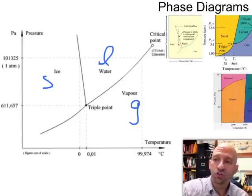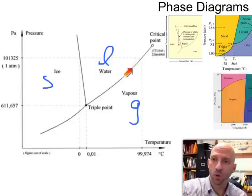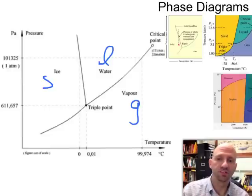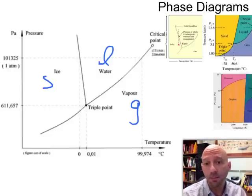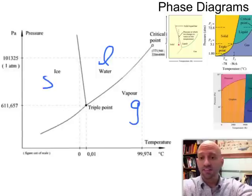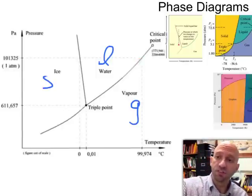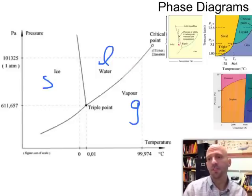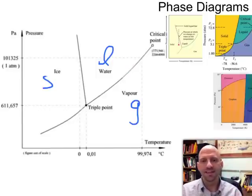As we lower the pressure, you can see that the boiling point for water goes down. That makes sense — we've talked about this before and seen it in things like the Clausius-Clapeyron relationships. For example, in Denver — the mile-high city — it has a lower atmospheric pressure, so water in Denver boils at a noticeably lower temperature.